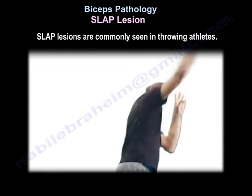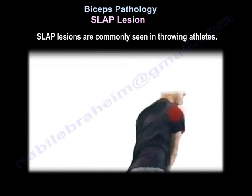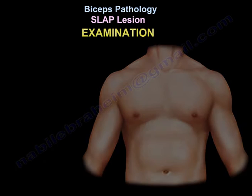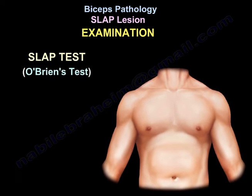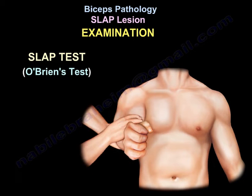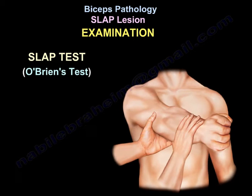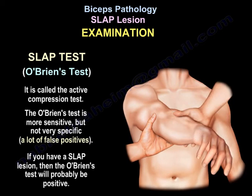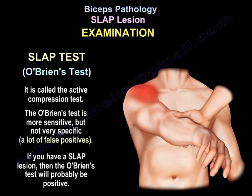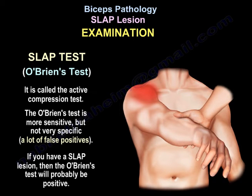This SLAP lesion is usually common in throwing athletes. The clinical diagnosis can be made by performing the O'Brien test, also called the active compression test. The O'Brien test is more sensitive, but not very specific.